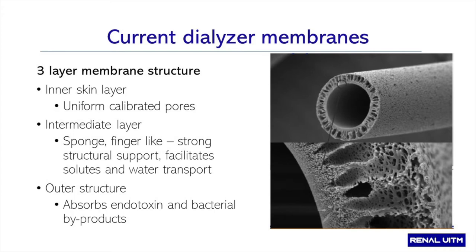The inner skin layer contains pores to allow small and middle molecules to pass through, whilst retaining essential proteins — essentially albumin. The intermediate layer looks like a sponge or bone, which provides strong structural support to the hollow fibers and facilitates the transport of water and solutes across the membranes. The finger-like structure gives it mechanical stability, enabling minimal resistance to water and solute transport due to its openness.